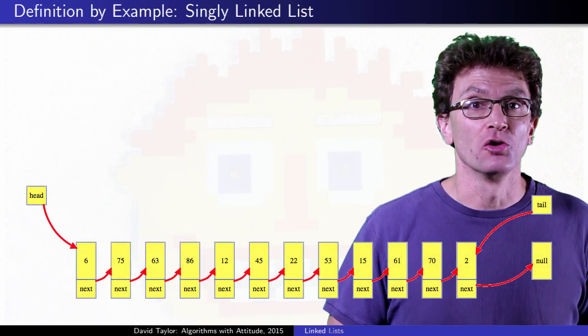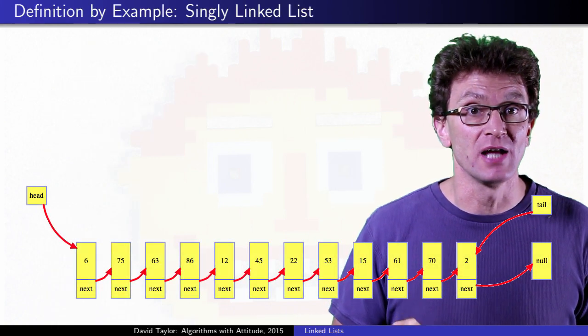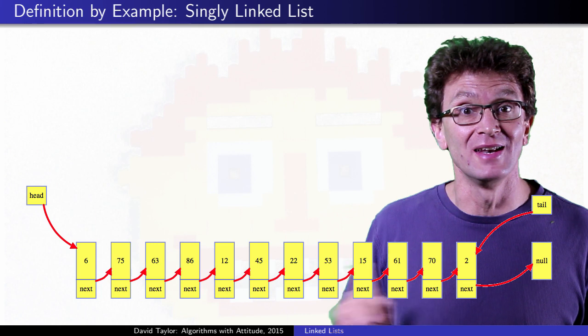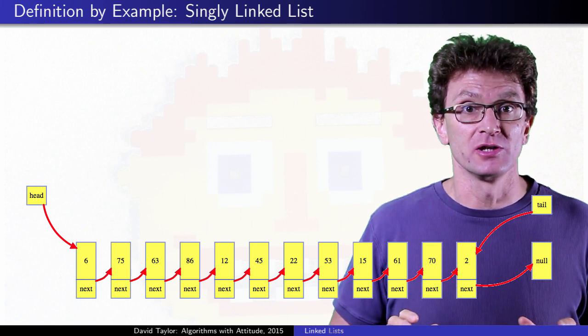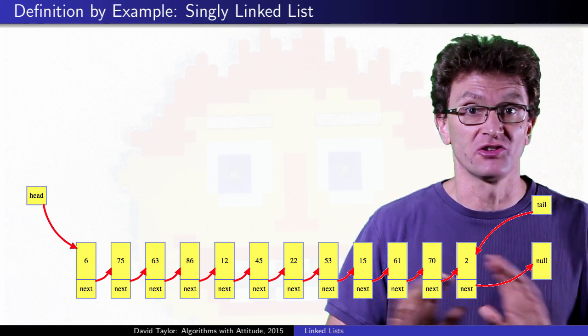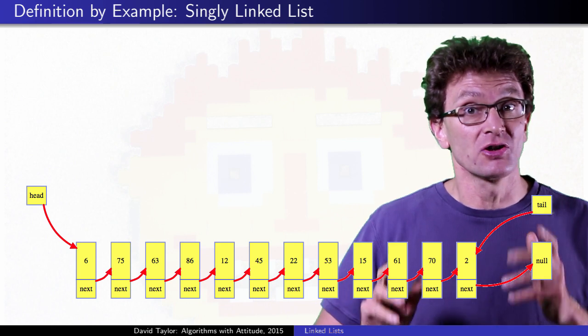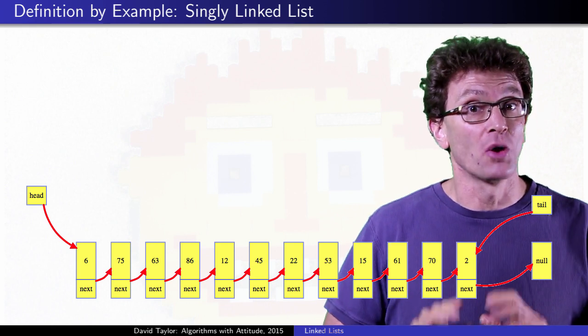A linked list is a chain of nodes where each node keeps track of some data, as well as a reference to the next node in the list. Here I imagine the information stored for each node is just some integer, but lists are abstract data types, so a node can store anything you want.